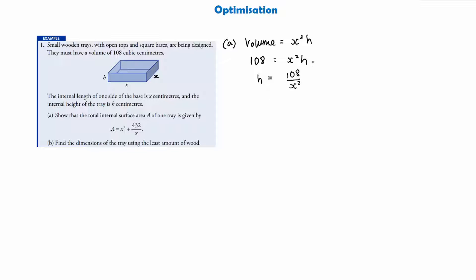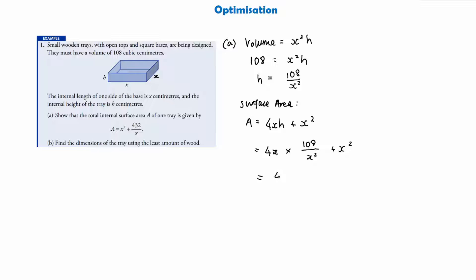The surface area of all the sides and the base is 4xh + x². Substituting h = 108/x² gives 4x × (108/x²) + x². Multiplying out the numerator gives 432x/x². Since there is one x on top and x² on the bottom, one x cancels, leaving 432/x. So the expression becomes 432/x + x².